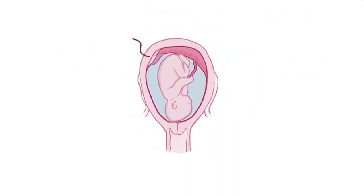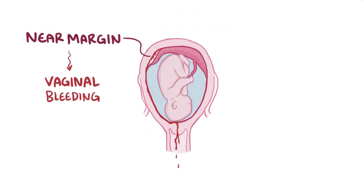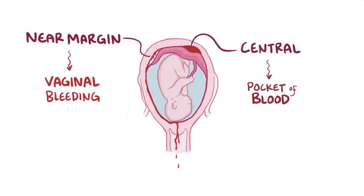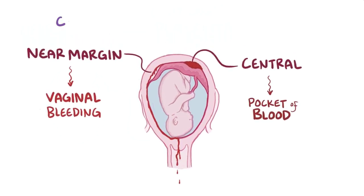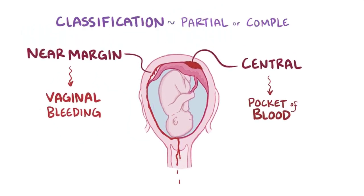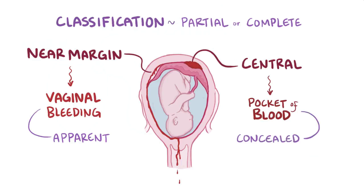If the separation is near the margin of the placenta, it can cause vaginal bleeding. But if the separation is more central, there might be a pocket of blood that stays concealed within the decidua basalis in the uterine wall. Placental abruption can be classified as either partial or complete, depending on the degree of separation from the uterine wall, as well as apparent or concealed, depending on whether vaginal bleeding is seen or not.